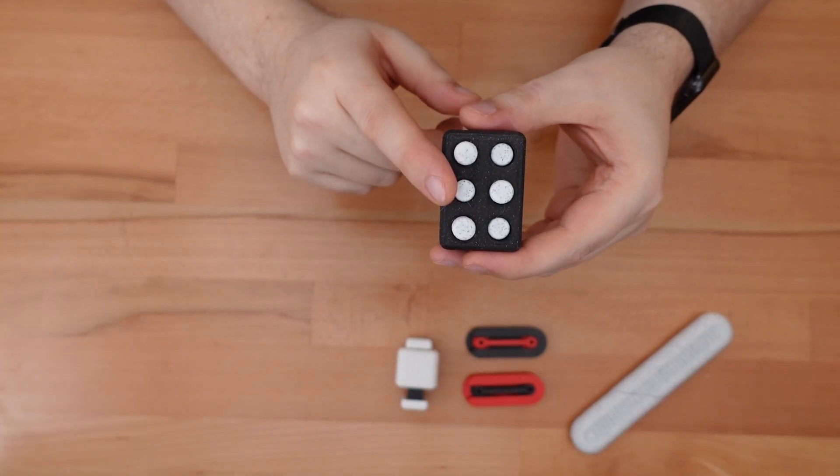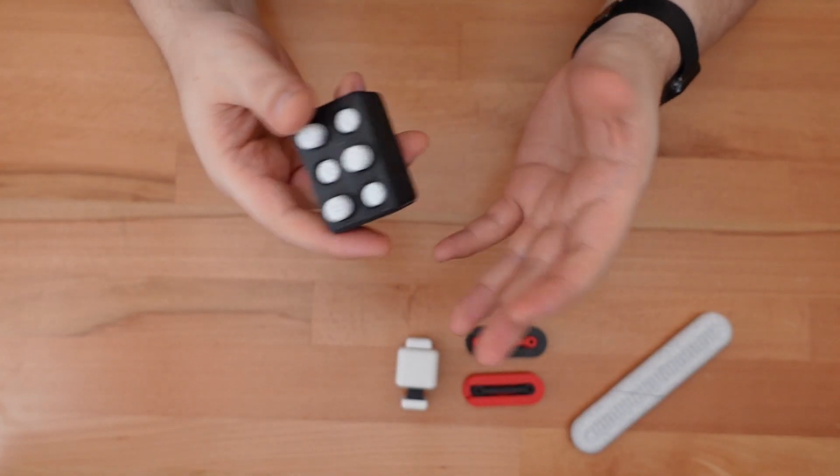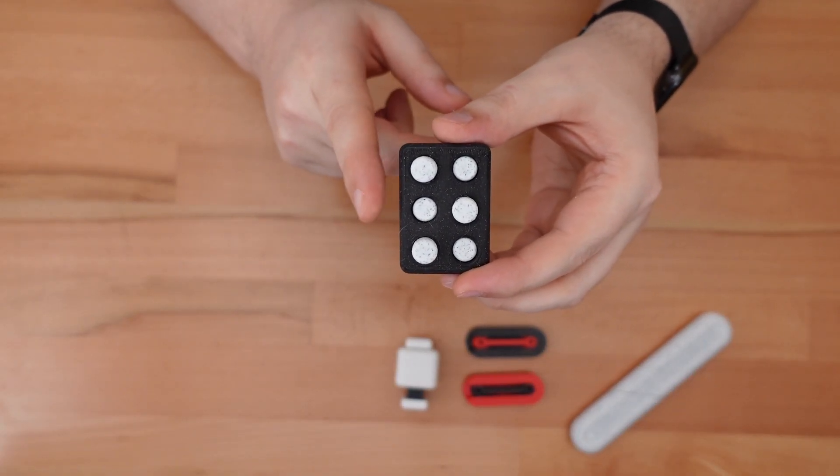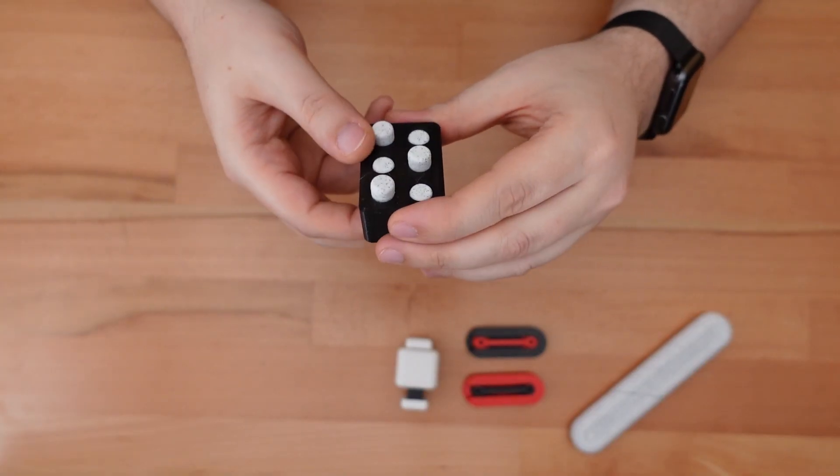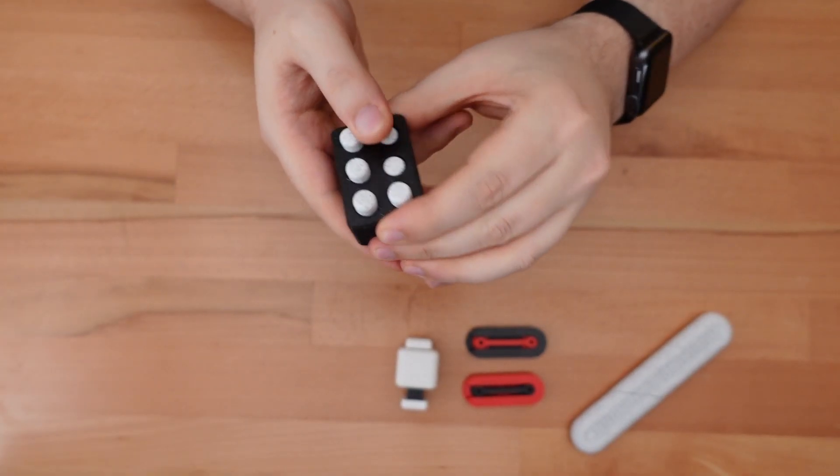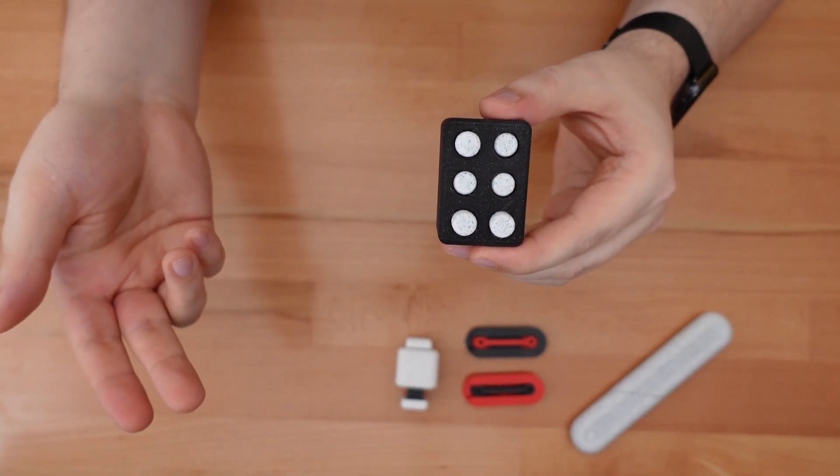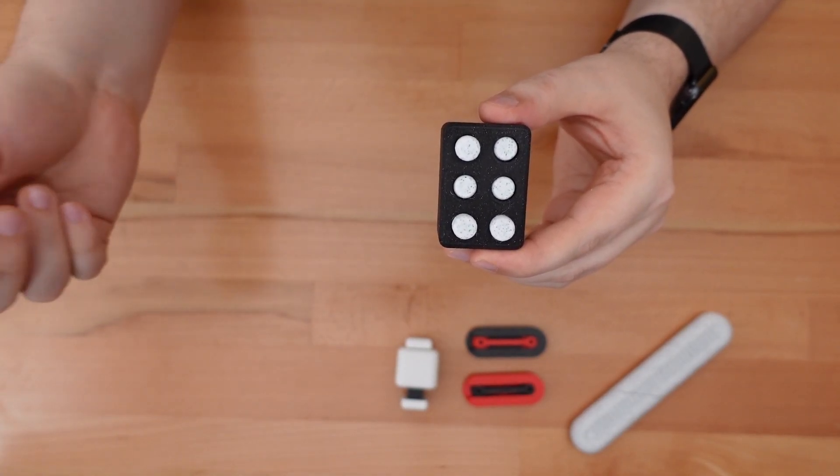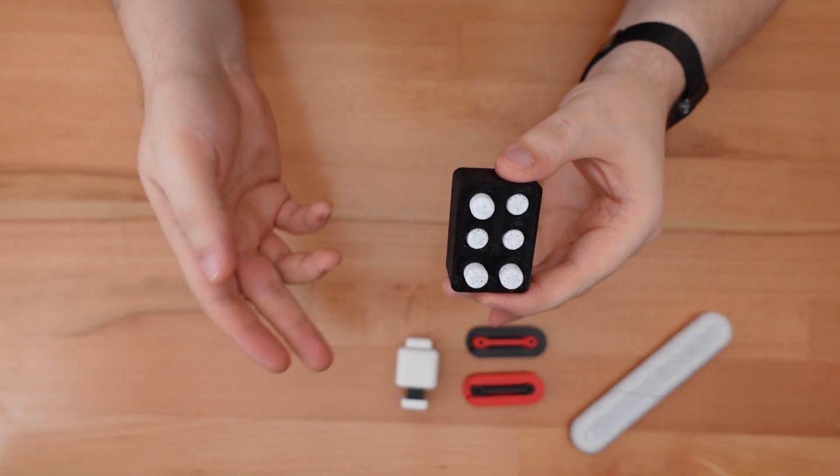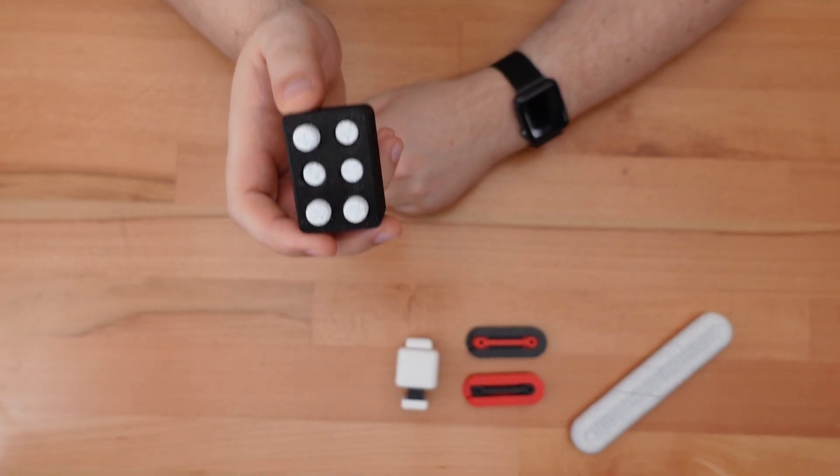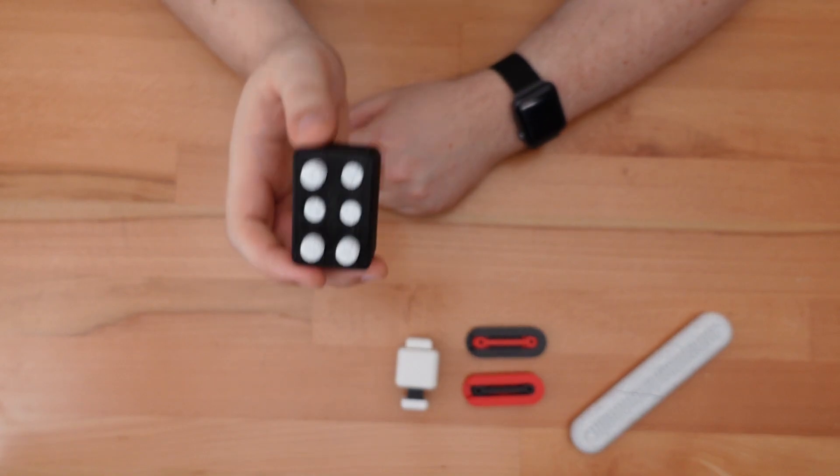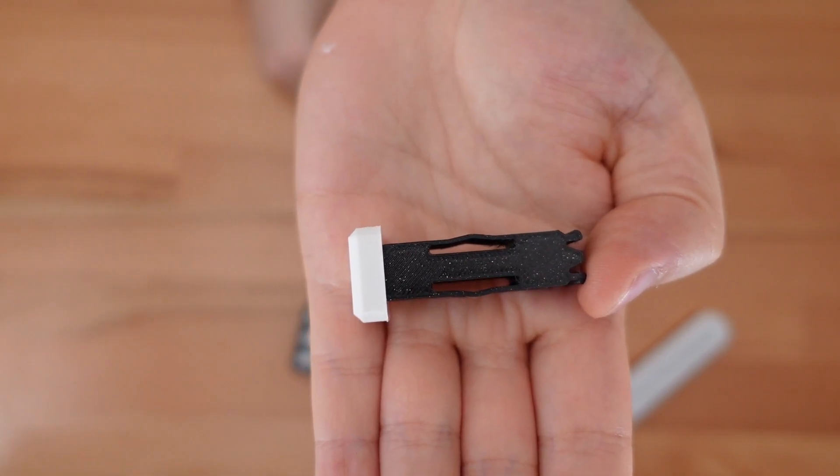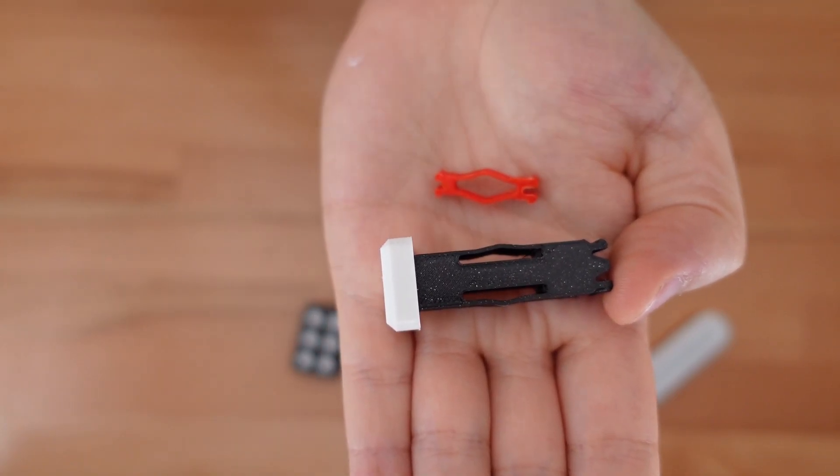This last design looks like another fidget toy. And yes, it could be used as one. But this is actually a teaching tool. It's an oversized braille cell with movable pegs. You can use this to demonstrate braille characters, or challenge a student to produce a requested character. This design started out as a viewer request about a month ago. That's right, it actually predates and inspired all of my other spring designs.